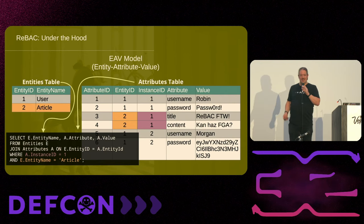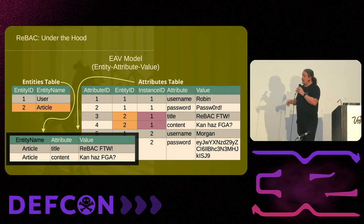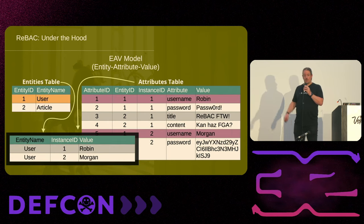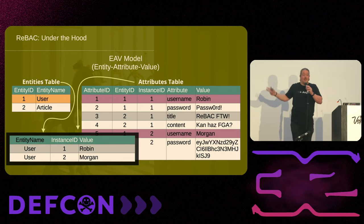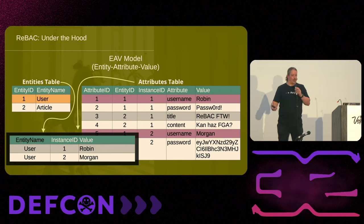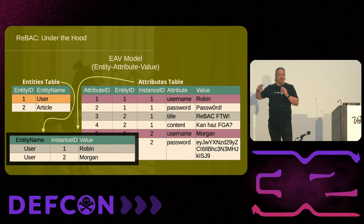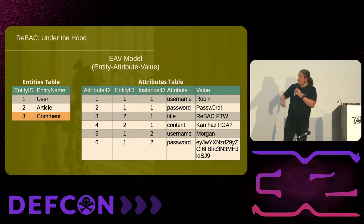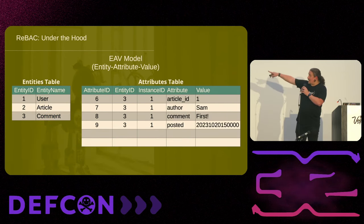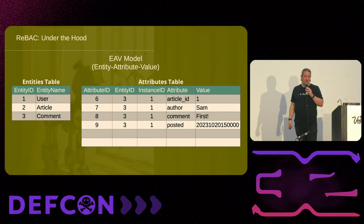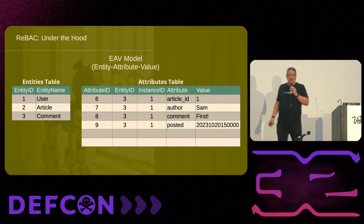Now if we want to pull stuff out, we can use a fairly simple join within SQL to say, give me all the articles with title and content, or give me a list of all the users and just their usernames. This table setup allows you to get really varied views across the data without having to change your database schema. If we want to add a comment, we just add an extra row with entity ID three, instance ID one, article ID one, author Sam, comment 'first', and a date stamp. Without any database schema change, we've added a whole new entity to the system.